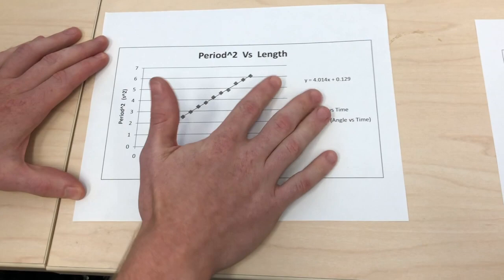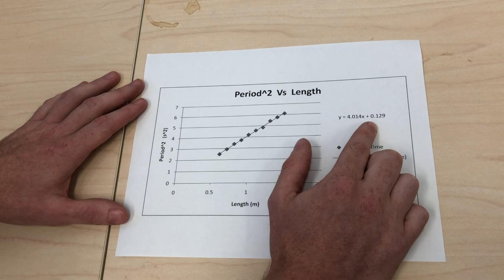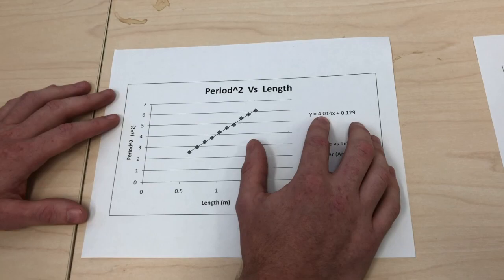As the length goes up the period goes up, and this gave us a y equals mx plus b formula and we're able to use this number to estimate gravity.